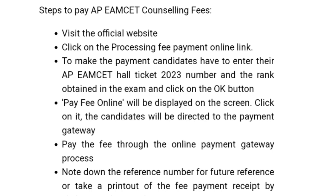To make the payment, candidates enter their EAMCET hall ticket number and rank in the exam, then click the OK button. You need to open your registration and pay the registration fees. Enter the event bank details and your expiration date for the payment. The receipt page will then be updated, and you can print the receipt of your payment.